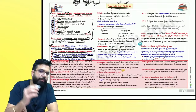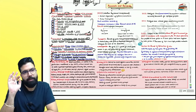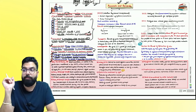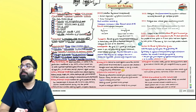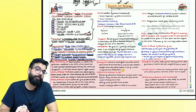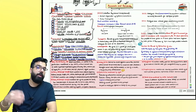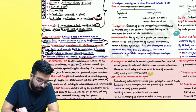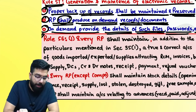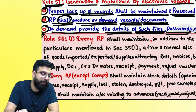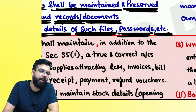So: can you maintain accounts manually? Yes. Can you maintain electronically? Yes. When maintaining electronically: (1) proper backup must be taken; (2) on demand, you must provide the records and documents maintained; (3) you must provide the file details, whichever file he demands, along with the password.